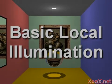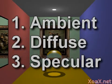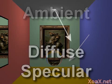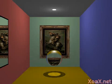The classic local illumination model has three parameters: ambient, diffuse, and specular. The ambient term represents indirect light which is reflected off other objects, and the diffuse and specular terms represent light which comes directly from a light source. We will cover the actual equations later.